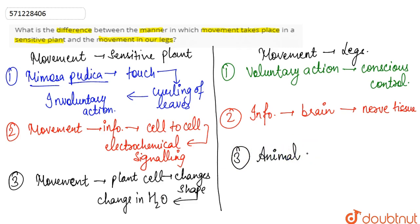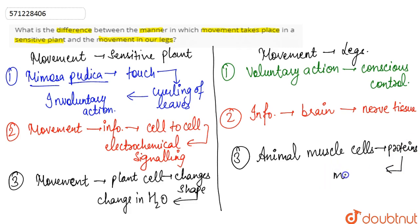But in the case of the movement in our legs, the animal muscle cells contain certain proteins that are responsible for the movement to occur. There is no such change in water content — instead, the animal muscle cells contain proteins which allow the movement to take place. That is the difference between movement in the sensitive plant and movement in our legs.